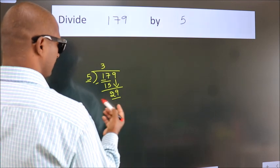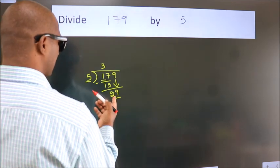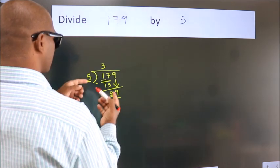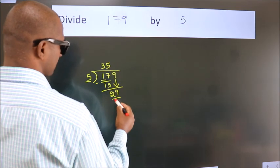A number close to 29 in the 5 table is 5 fives, 25.